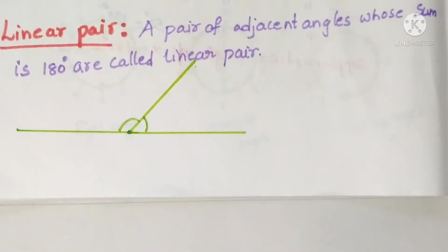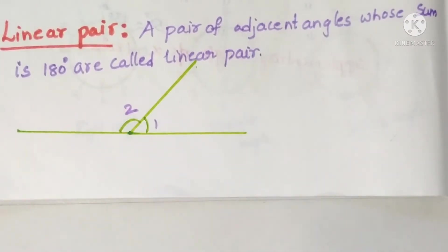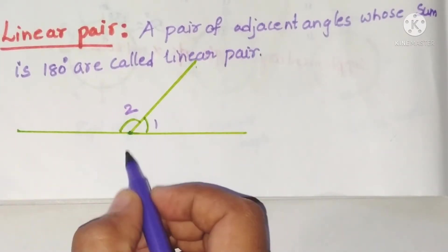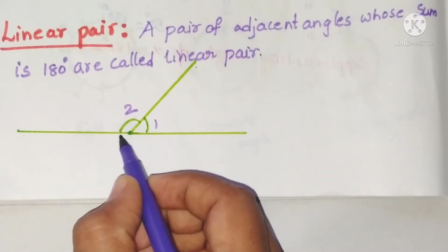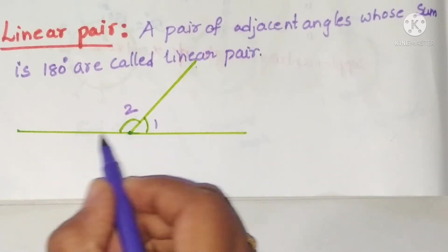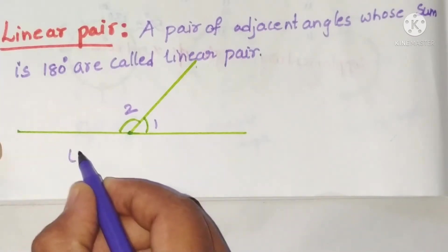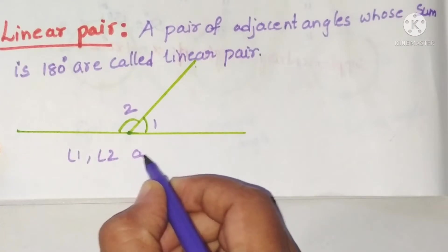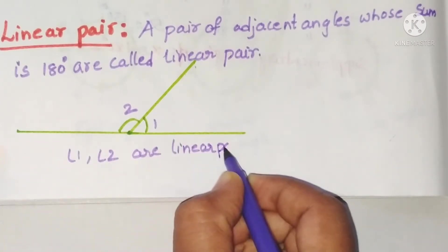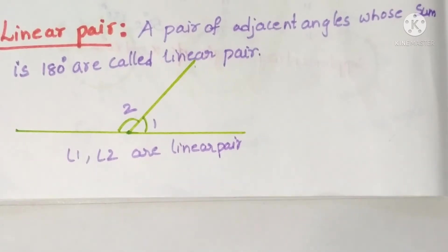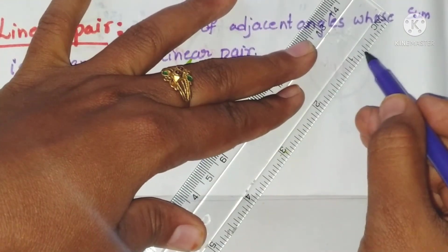See here — this is one angle and here is another angle. Angle 1 and angle 2 form a straight line. That means the sum of the two angles is 180 degrees, so we can say angle 1 and angle 2 are a linear pair.